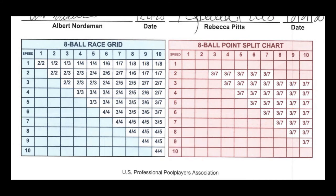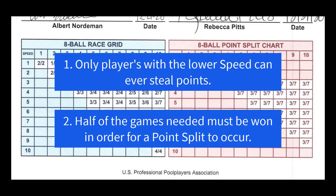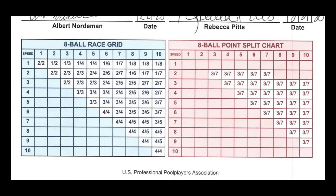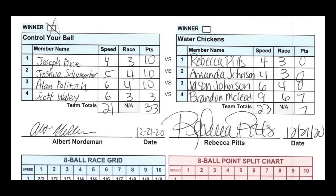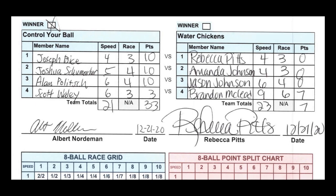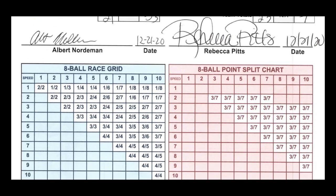Keep in mind if a point split is available and the player with the lower speed actually reaches the games they need to win the match, they get the full 10 points. The player with the highest speed never has an opportunity to steal points. Not only do point splits help the player with the lower speeds in a handicapping system, but it also ensures that the player with the higher speed will play their game so that they don't lose valuable points.